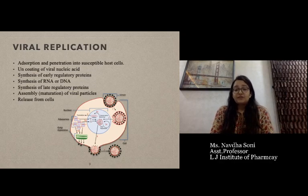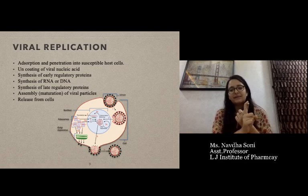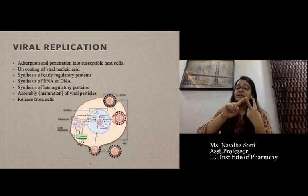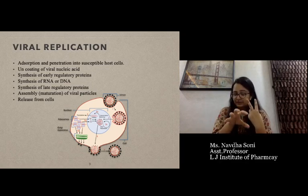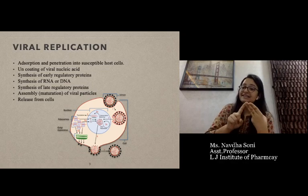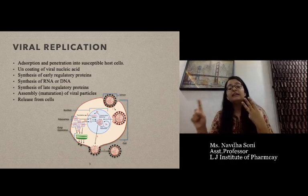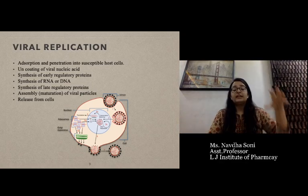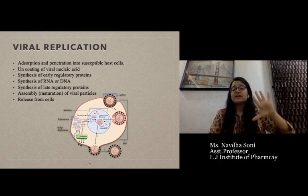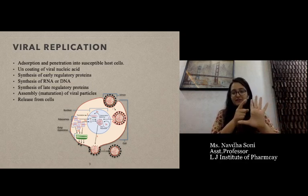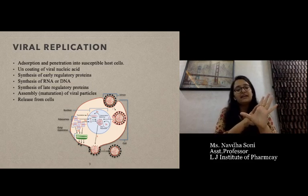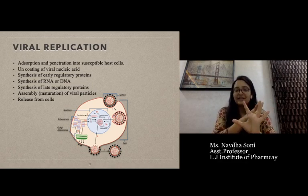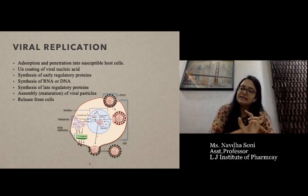These are the steps of the viral replication process. The first step is absorption and penetration into the susceptible host cell. After that, uncoating of the viral cell, then synthesis of DNA, RNA, and other regulatory proteins. Then the maturation period, and finally release from the cell. These five steps are important for the viral replication process.